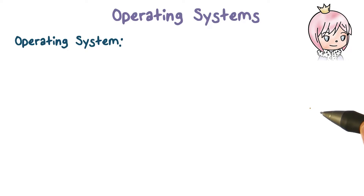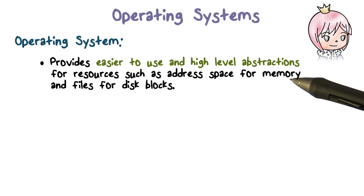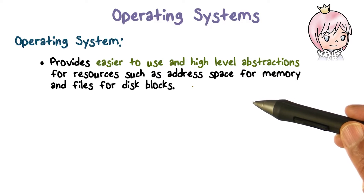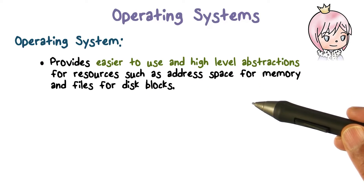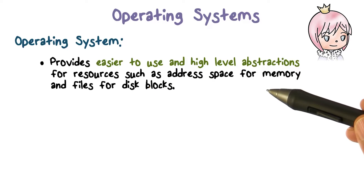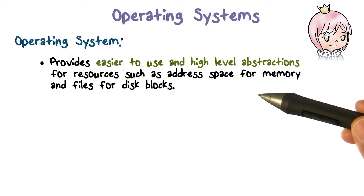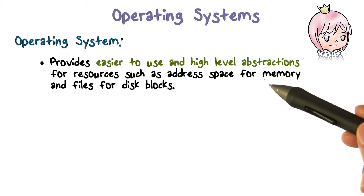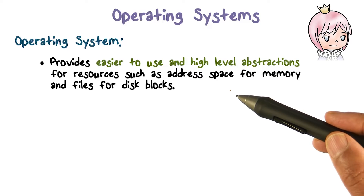Applications rely on the operating system. So what does it really do for you? The hardware is actually not very easy to use if you had to use it directly. If you wanted to program your applications and had to work with the hardware directly, it's going to be infinitely more complex. So what the operating system does is that it creates easier to use and high level abstractions for the resources that the hardware provides.